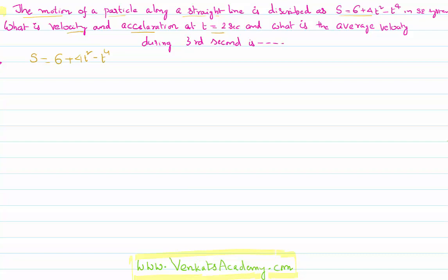Velocity is defined as rate of change of displacement. So if the displacement is given as a function of time, to calculate the velocity I shall differentiate the displacement function with respect to time — that is d/dt of (6 + 4t² − t⁴).